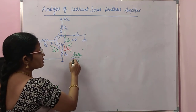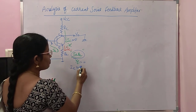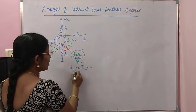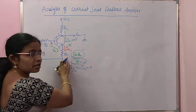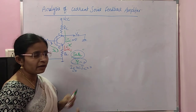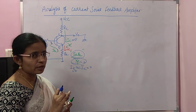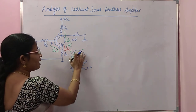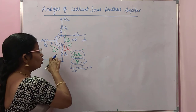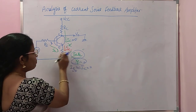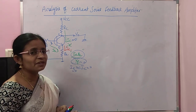It is current sampling because making IC equal to 0 makes IE·RE equal to 0, since IE is approximately equal to IC. So if IC is 0, IE becomes 0 and XF becomes 0. Also, the voltage across RE adds to the external input signal as a voltage in the loop — hence it is series mixing. So totally, this is a current series feedback amplifier.